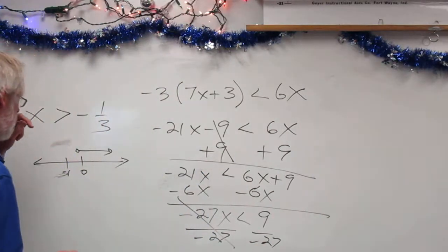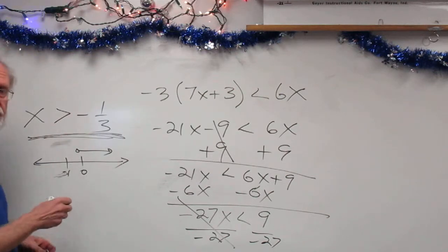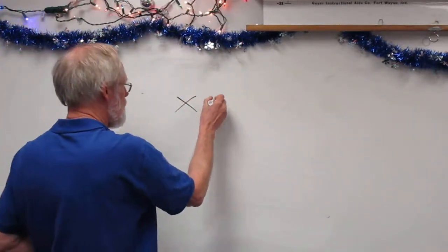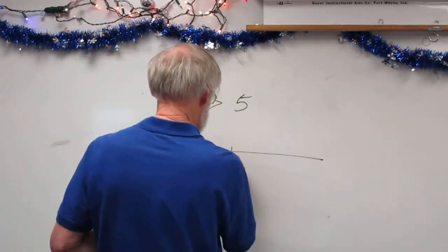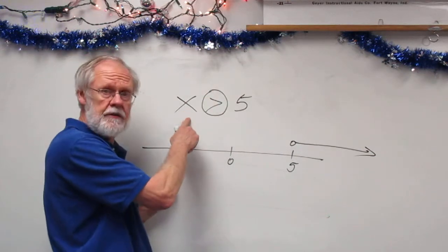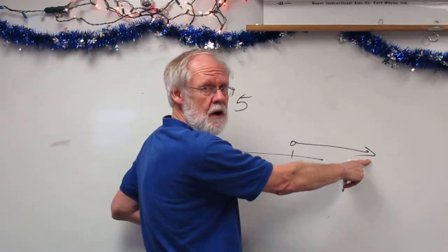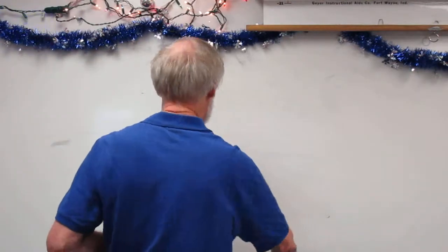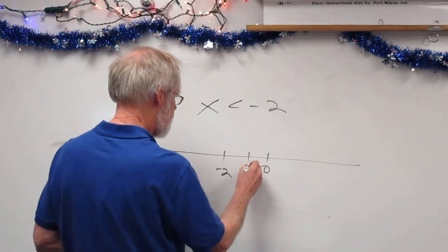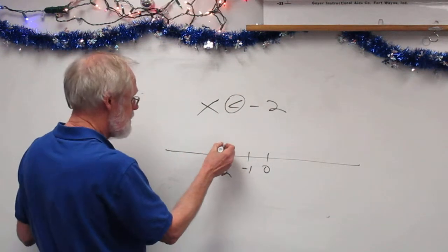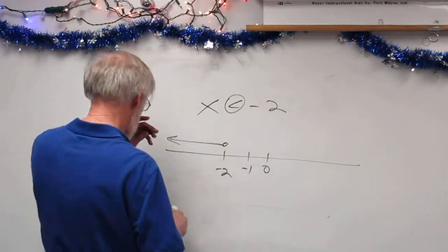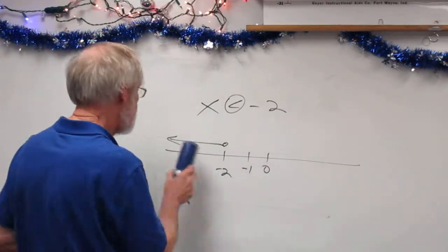There is a trick to help you know you're graphing in the right direction. If the variable is on the left — say x is greater than 5 — the inequality sign points in the same direction as the arrow on the number line. Likewise, if x is less than negative 2, the arrow goes left, and the inequality sign also points left. This only works if the variable is on the left; otherwise you'll get confused. But it helps you verify you're pointing in the right direction when you graph.